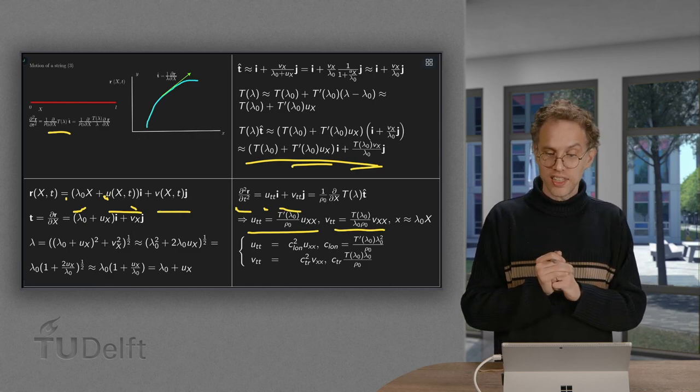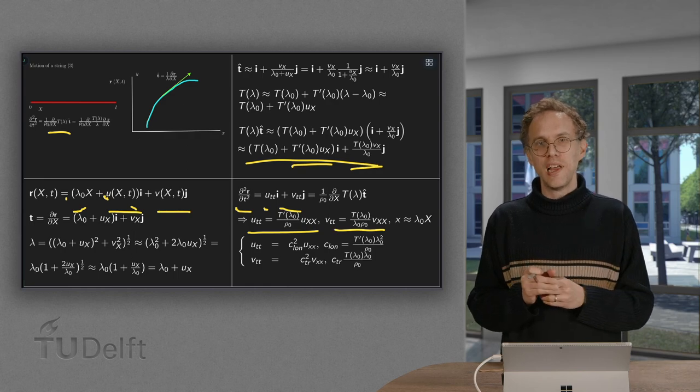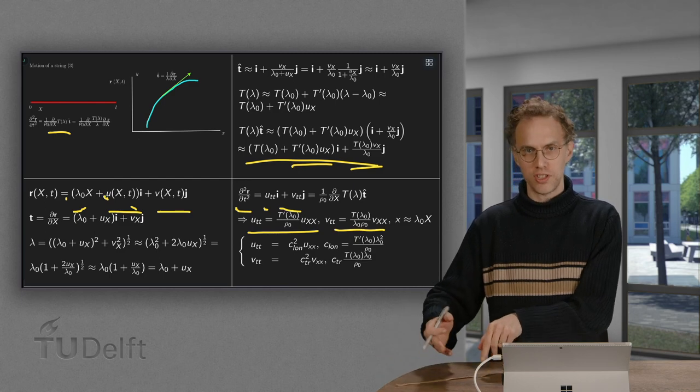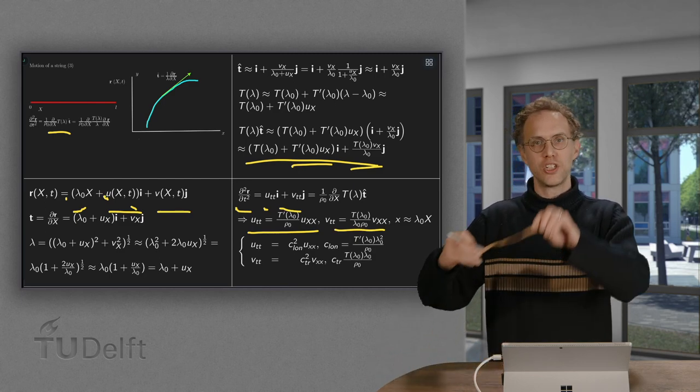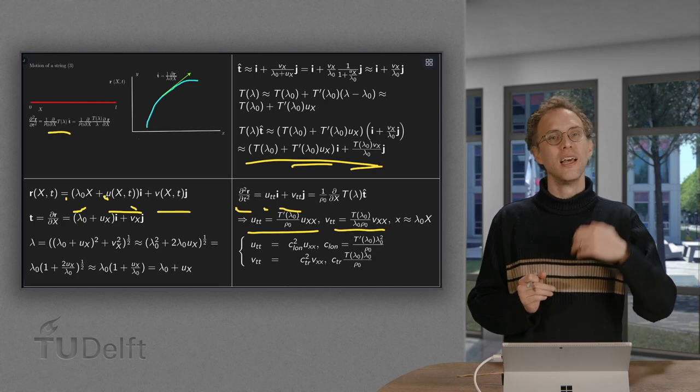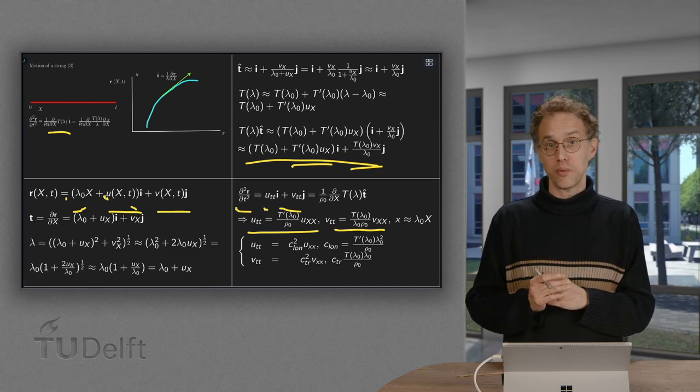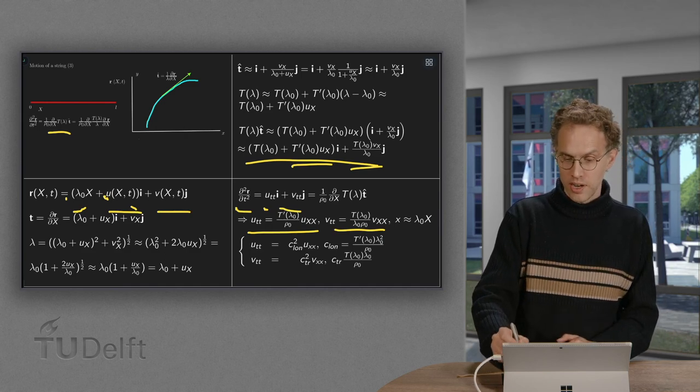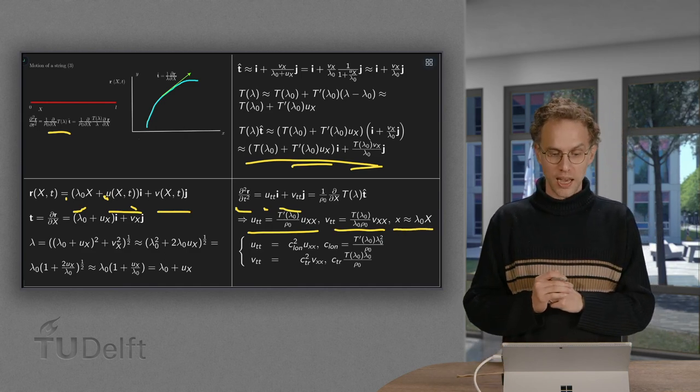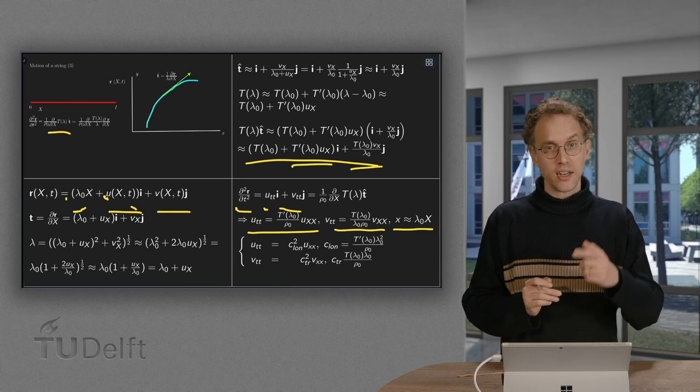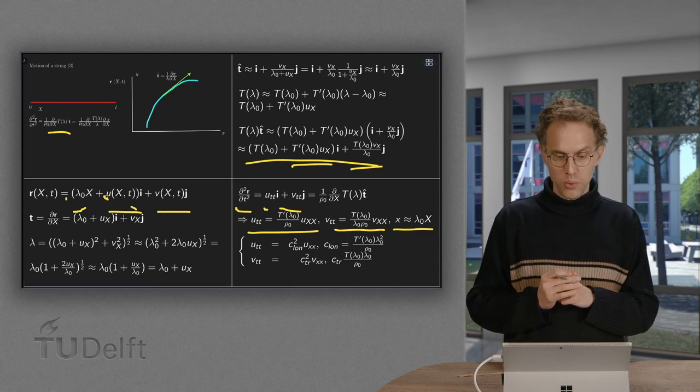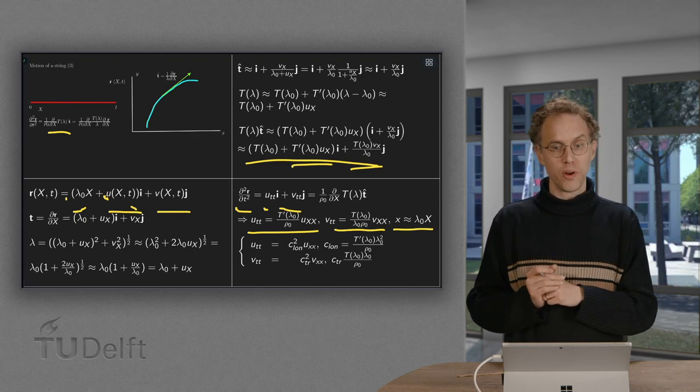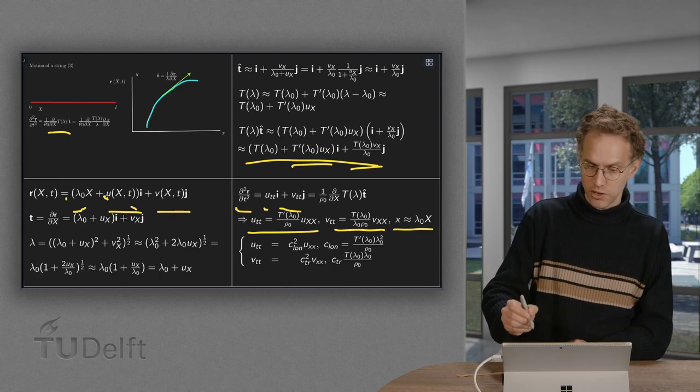We only like to replace the capital X by small x's. Like the capital X's for the components on the string if it's just lying there. And the small x's for the components if you are moving around. I rather have your problem in terms of the small x's. Fortunately that's possible. Because up to linear order. Small x equals lambda 0 times the capital X. So we can replace the uxx. The capital X's by small x's. But then we just get a 1 over lambda. We get an additional factor lambda 0 squared.